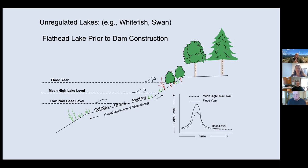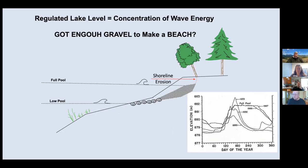We need to find solutions for those lakes as well — it's actually quite a bit easier than Flathead. Flathead concentrates wave energy because it's regulated and held at full pool elevation, actually above its mean annual level. It concentrates all that wave energy at that level and causes pretty severe erosion. The question is: is there enough gravel material to stay on the beach to make a beach and protect this new full pool shoreline?